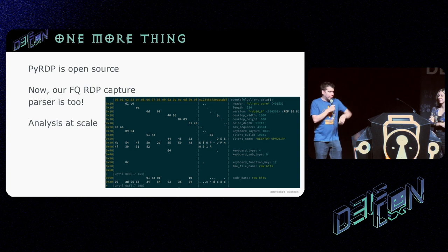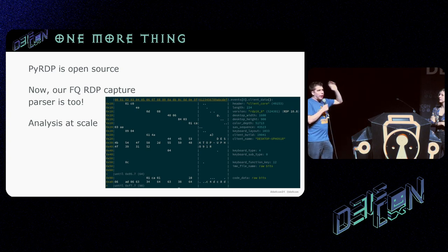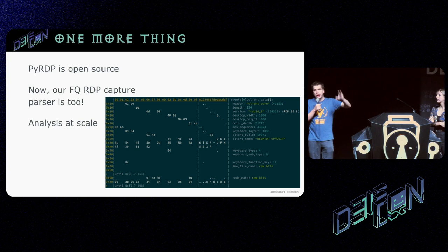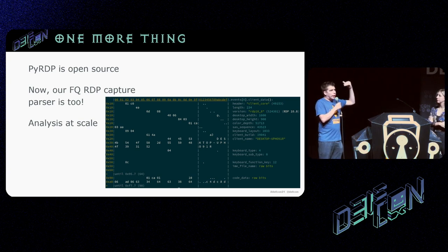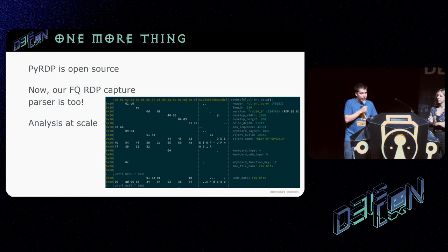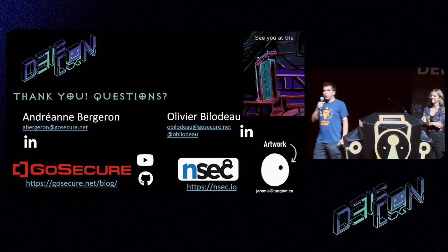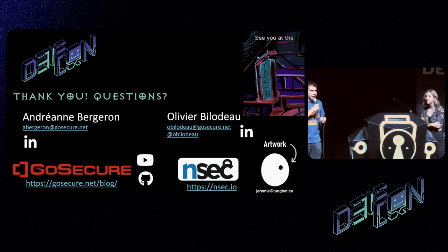One more thing — Apple style: PyRDP is open source, and we released three days ago our FQ binary parsing tool. FQ is like jq but for binary files. With this you can do analysis at scale on captures. If you want to contribute to it, we'd appreciate it. And with that, we are done — you've been amazing. Thank you so much.